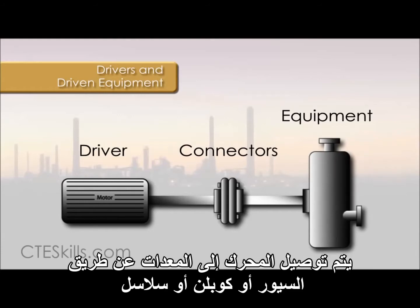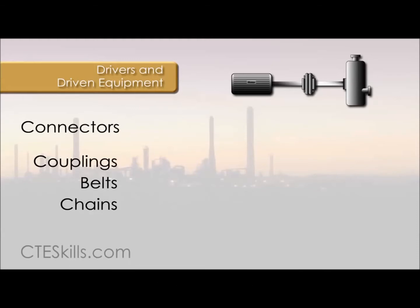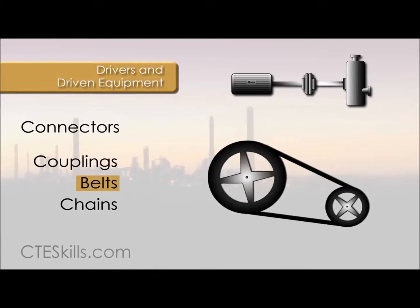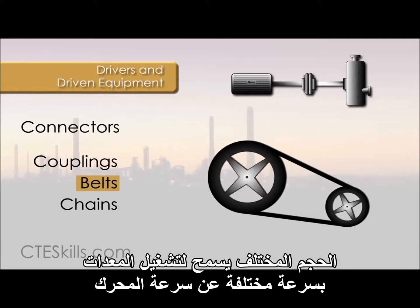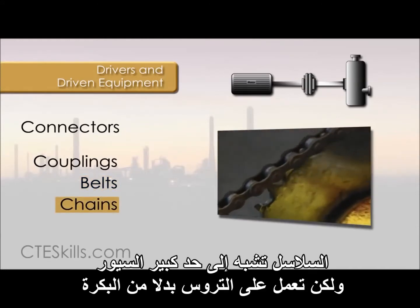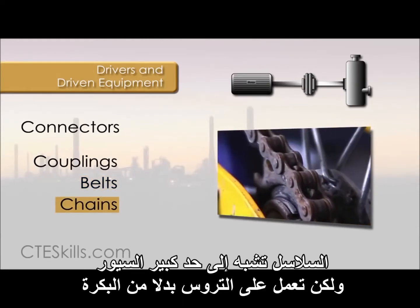The drivers are connected to the equipment by couplings, belts, or chains. Belts operate on a pulley system. They connect two parallel shafts. The size of the pulley determines the speed. Different sizes allow the equipment to operate at a different speed than the driver. Chains are quite similar to belts, but operate on a series of sprocket wheels instead of a pulley.